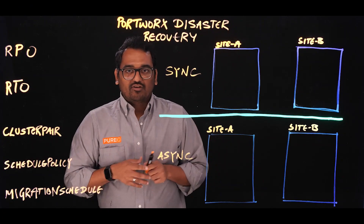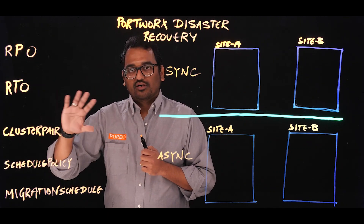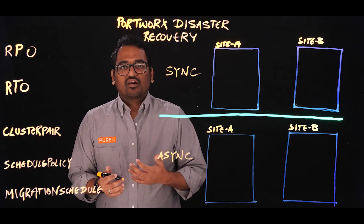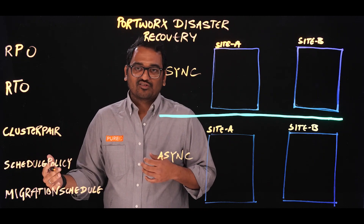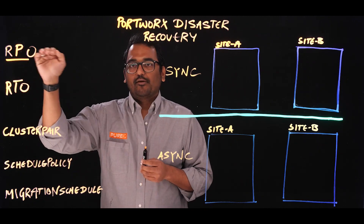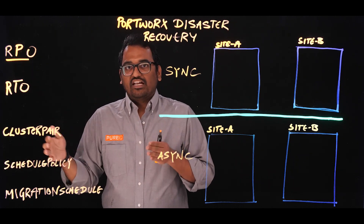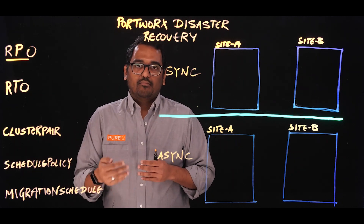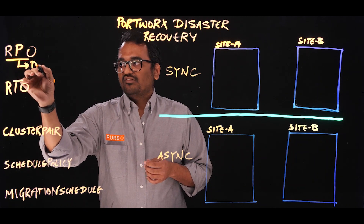Before we look at the architecture level details between your primary and secondary sites, we do want to cover a few terms to make this video a bit easier to consume. Let's start by talking about a few acronyms you come across whenever you're talking about disaster recovery solutions. The first one being Recovery Point Objective, or RPO. RPO basically means the amount of data loss an organization can suffer when and if they get hit by a disaster event. In simple terms, RPO means data loss.